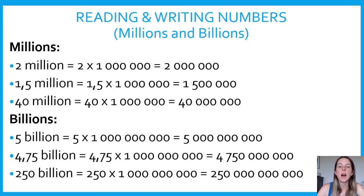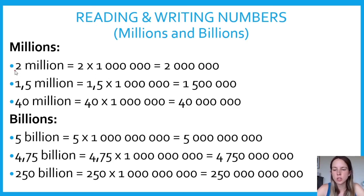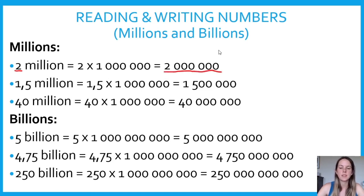Let's look at how to interpret millions and billions. Sometimes you read something like a house is worth 2 million rand — what does that actually mean? Two million means 2 times 1 million. A million is a 1 followed by six zeros. So 2 million written as a number is 2 000 000. Similarly, 1.5 million is 1.5 times 1 000 000, which equals 1 500 000.